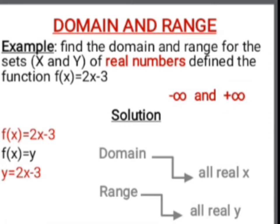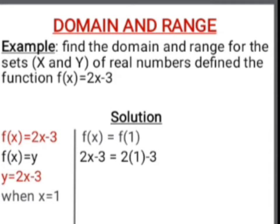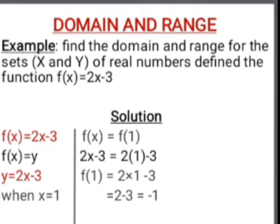To verify this, let's pick some numbers between negative infinity and positive infinity and substitute them for x in f(x) = 2x - 3, with f(x) = y. Let's set x = 1. We put 1 wherever we see x, so f(1) = 2(1) - 3 = 2 - 3, which equals -1.